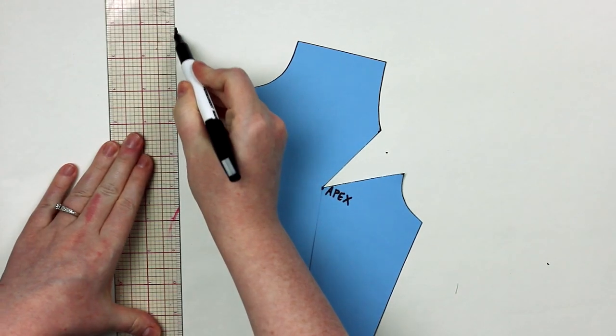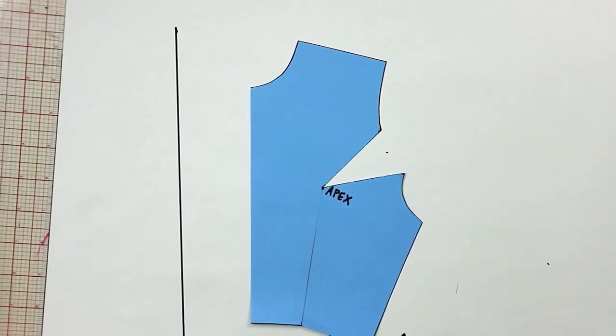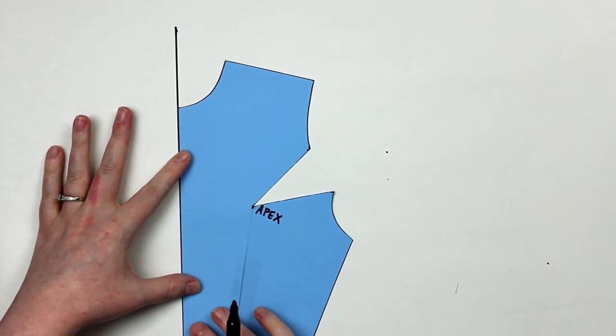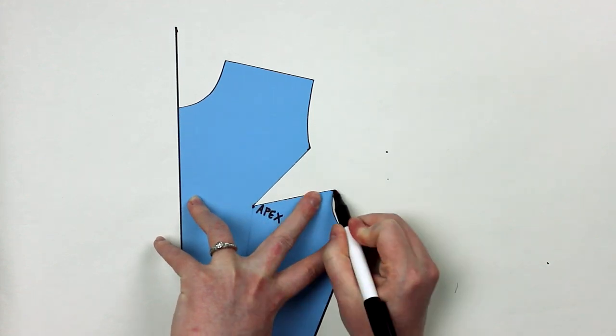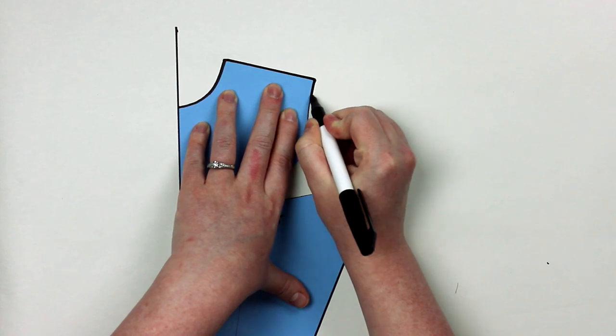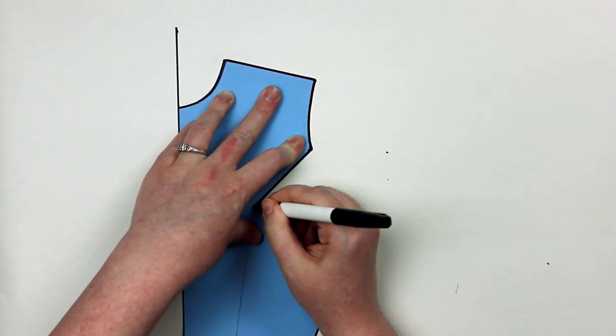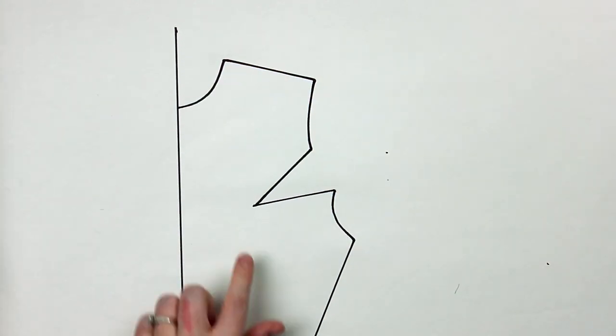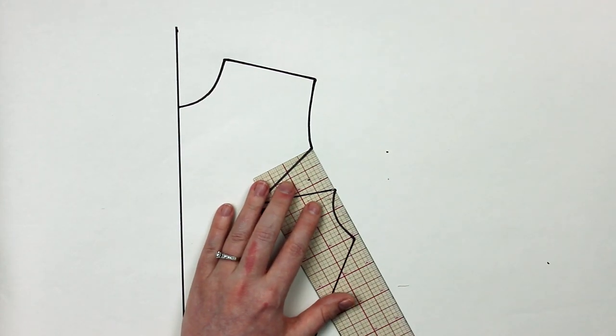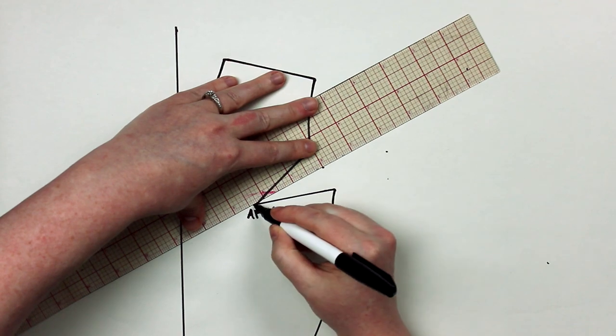The first thing I always like to do is draw a straight line and use that as my center front, just to make sure that it's always going to be perfectly straight and that I'm not accidentally tracing off a wobbly line. Then I trace around my entire piece and make sure to mark my apex. It's very important that your apex is always on your pattern just in case you need to make adjustments.